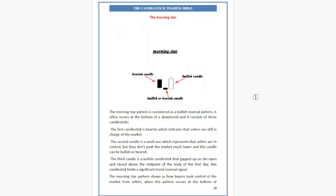The third candlestick is a bullish candlestick that gapped up on the open and closed above the midpoint of the body of the first candle. This candlestick holds a significant trend reversal signal. The Morning Star pattern shows us how buyers took control of the market from sellers.